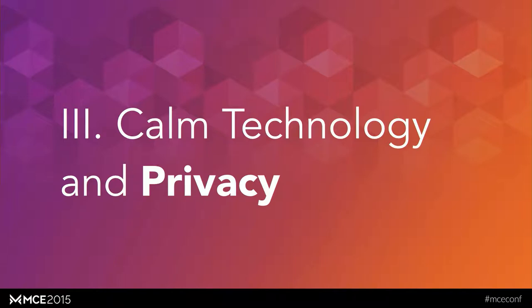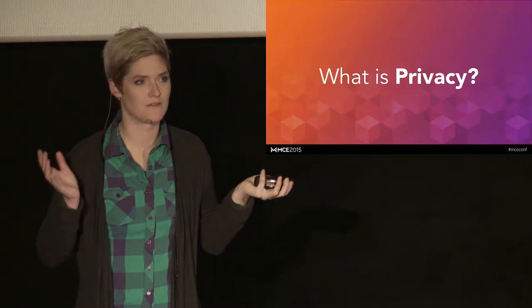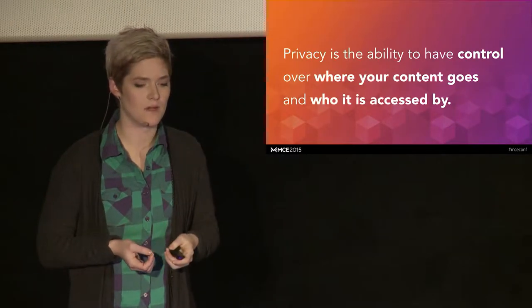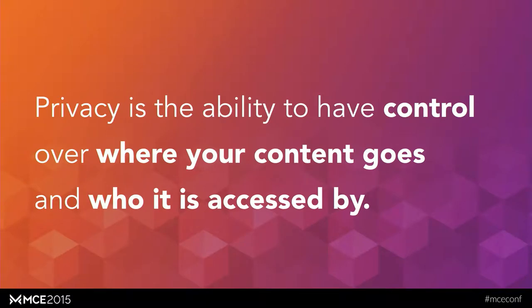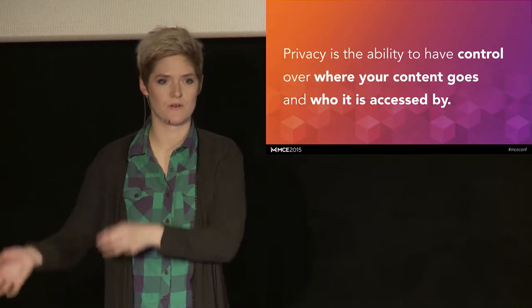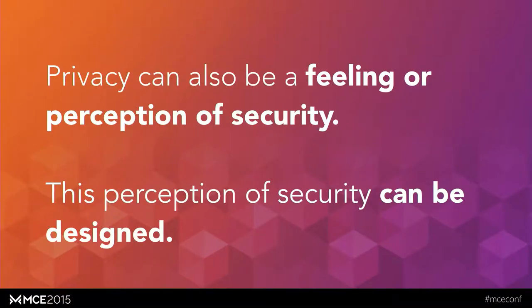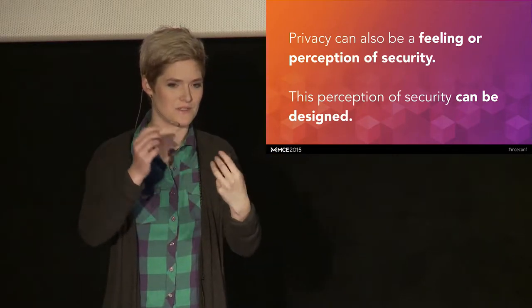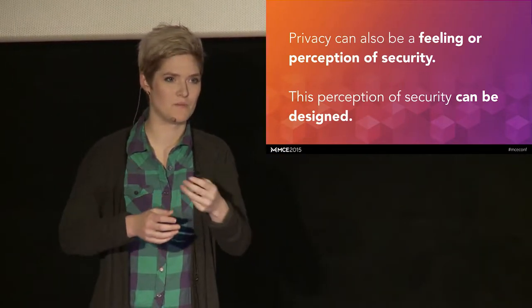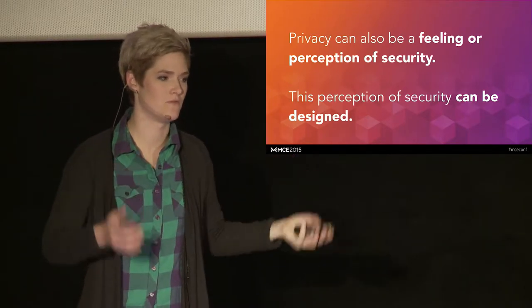So let's talk a little bit about Calm technology and privacy. I talked a little bit about this at the design meetup. But the definition of privacy that we have is multi, right? There's not really one set definition. But some people say it's the ability to have control over where your content goes and who it's accessed by. It's this kind of certainty. When I share this data, it's going to go here. And these are the people that are going to access it. I like this definition. It's reasonable. Or a feeling or perception of security.